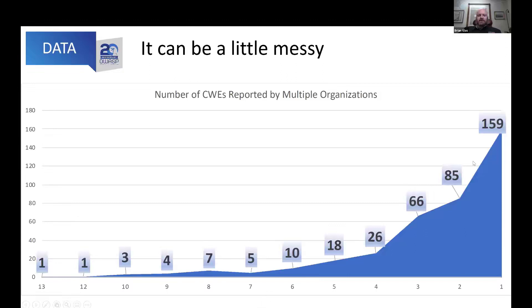We ran into an interesting thing when we got CWEs from organizations. Of 13 organizations, only one CWE did all 13 organizations report they actually tested for. Only one CWE did 10 organizations test for. What do you think the number one CWE tested for was? That's CWE-79 — and if you've dug into the CWE list, CWE-79 is, you guessed it, cross-site scripting. Shocker, right?